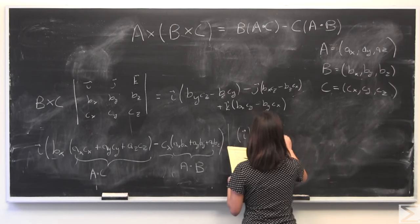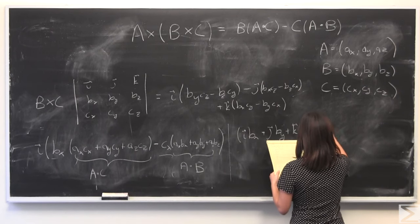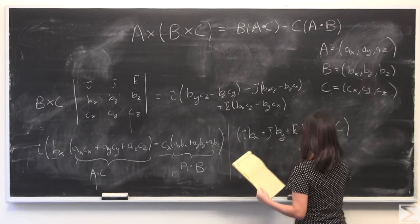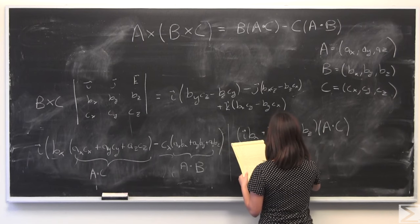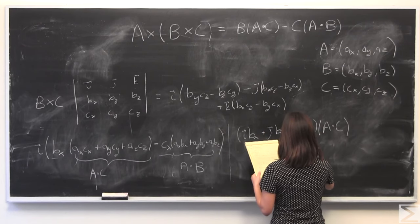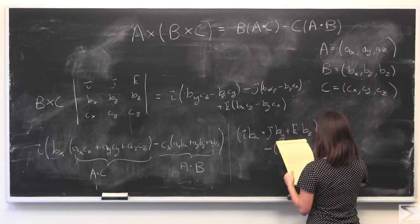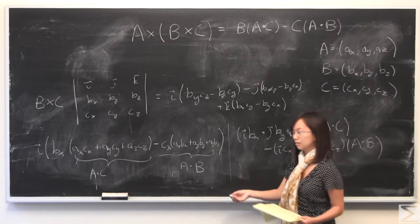There would be a j by term. There would be a k bz term. There would be that same a dot c. In addition, pull these out. And you would have this a dot b term.